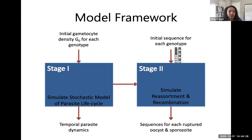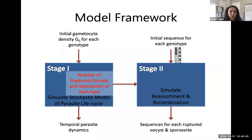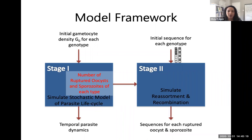Stage one models parasite numbers over time within a single mosquito, tracking quantities like the number of oocysts that rupture and the number of sporozoites of each type, which feed into stage two. Stage two assigns specific sequences to each parasite from stage one, then simulates reassortment and recombination to see what sequences emerge at different life cycle stages.